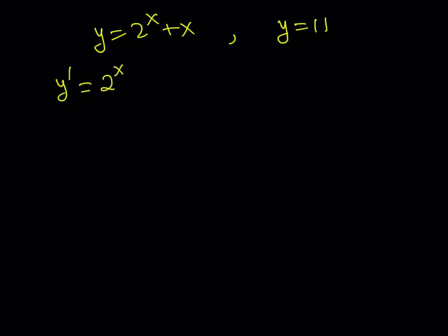We get 2 to the power of x multiplied by ln2 plus 1. As you know, 2 to the power of x for all x values, it's going to be positive. ln2 is positive because 2 is greater than 1. So adding 1 is going to make it positive as well. So y prime is always positive, which means y is increasing.